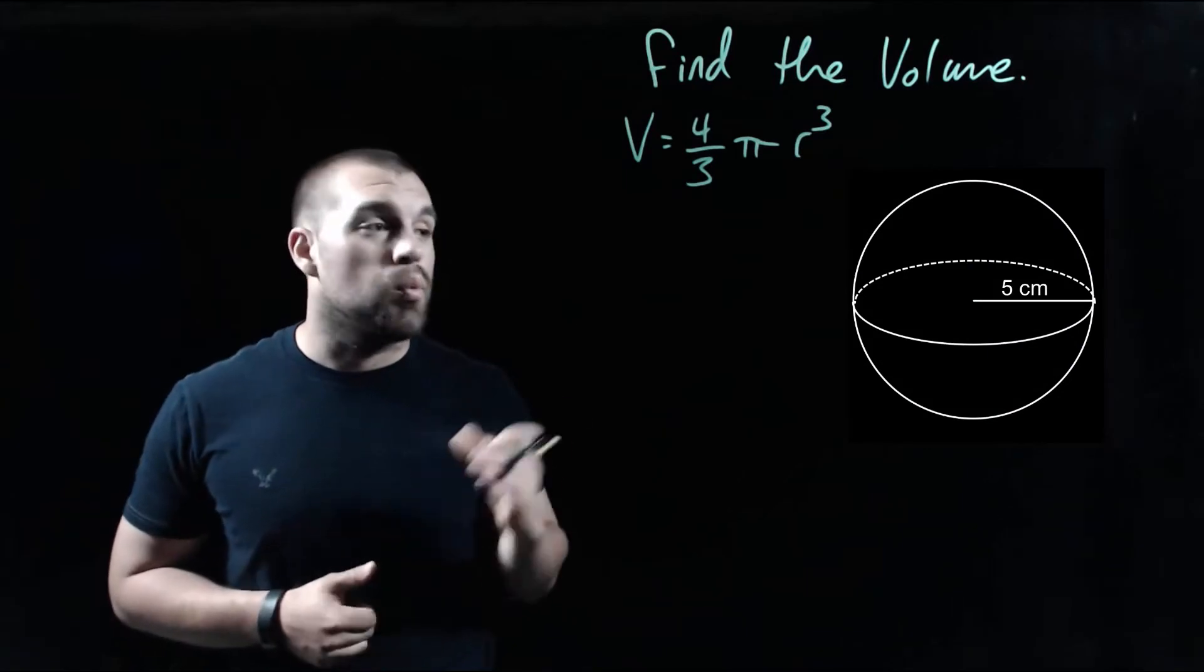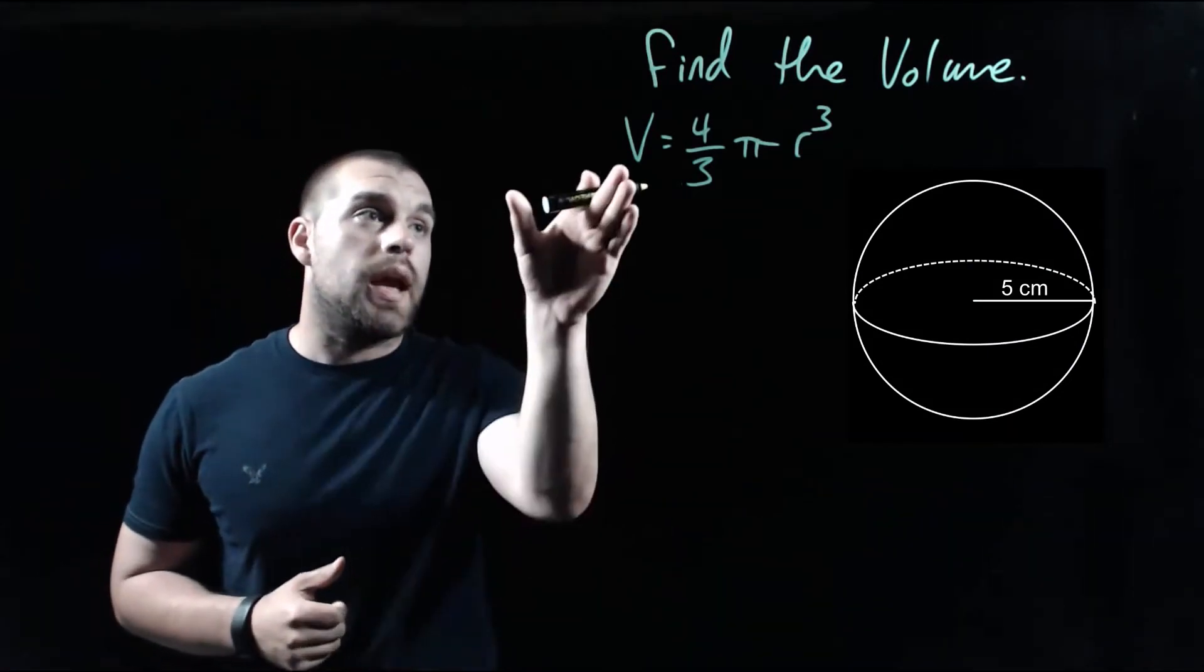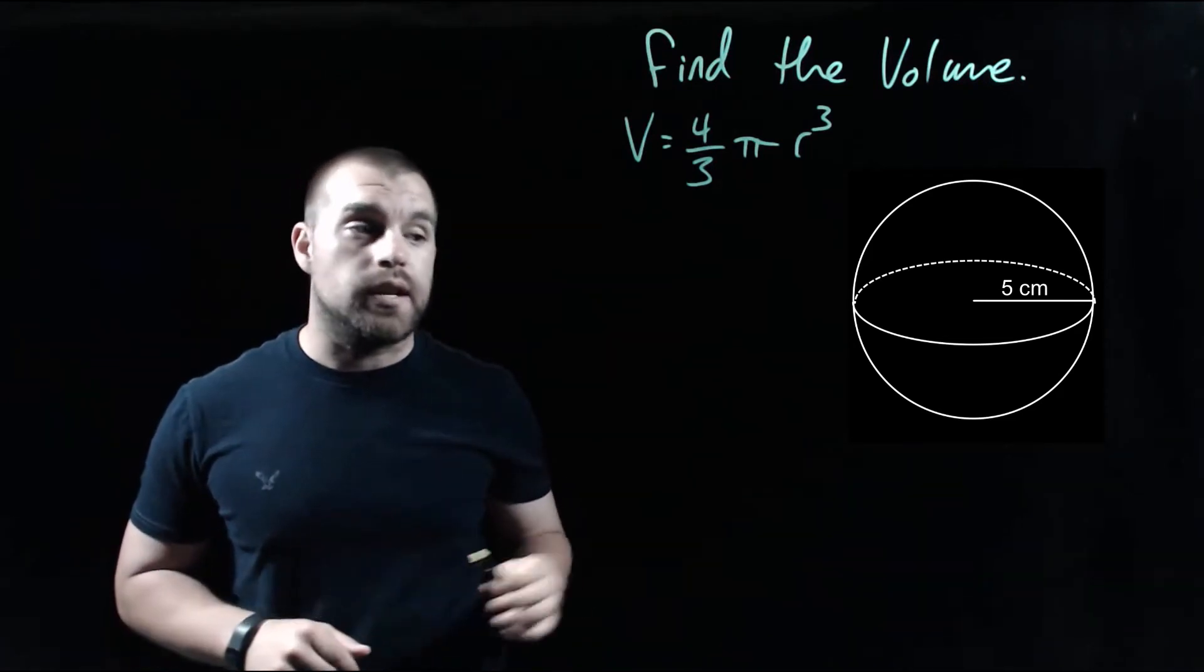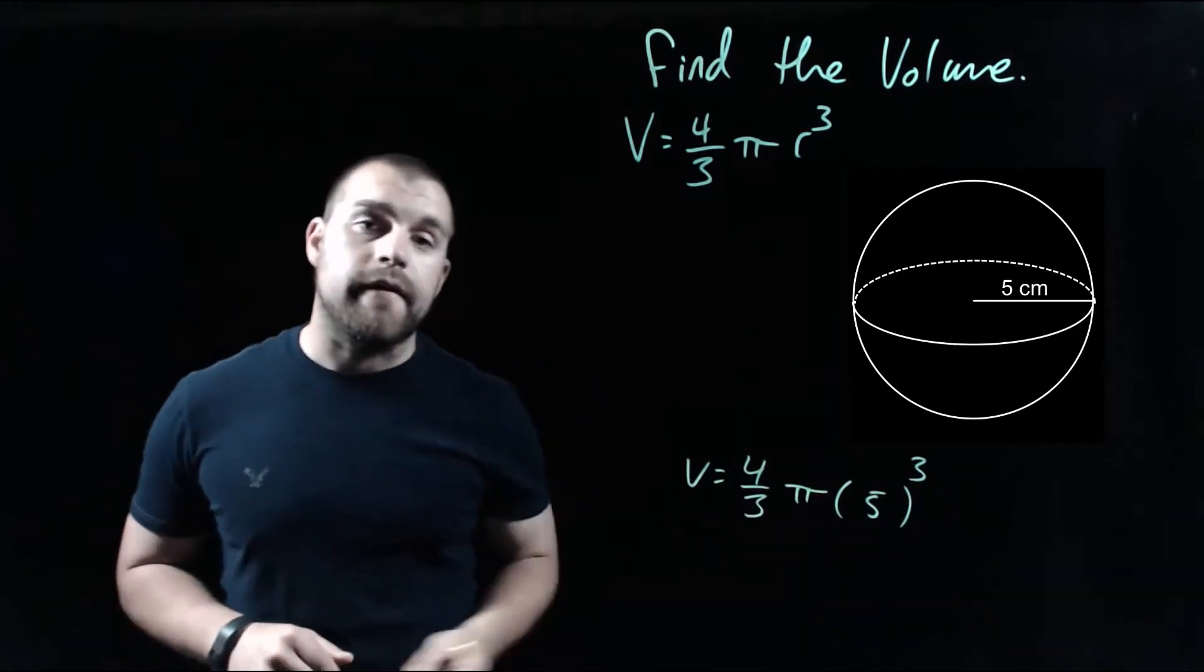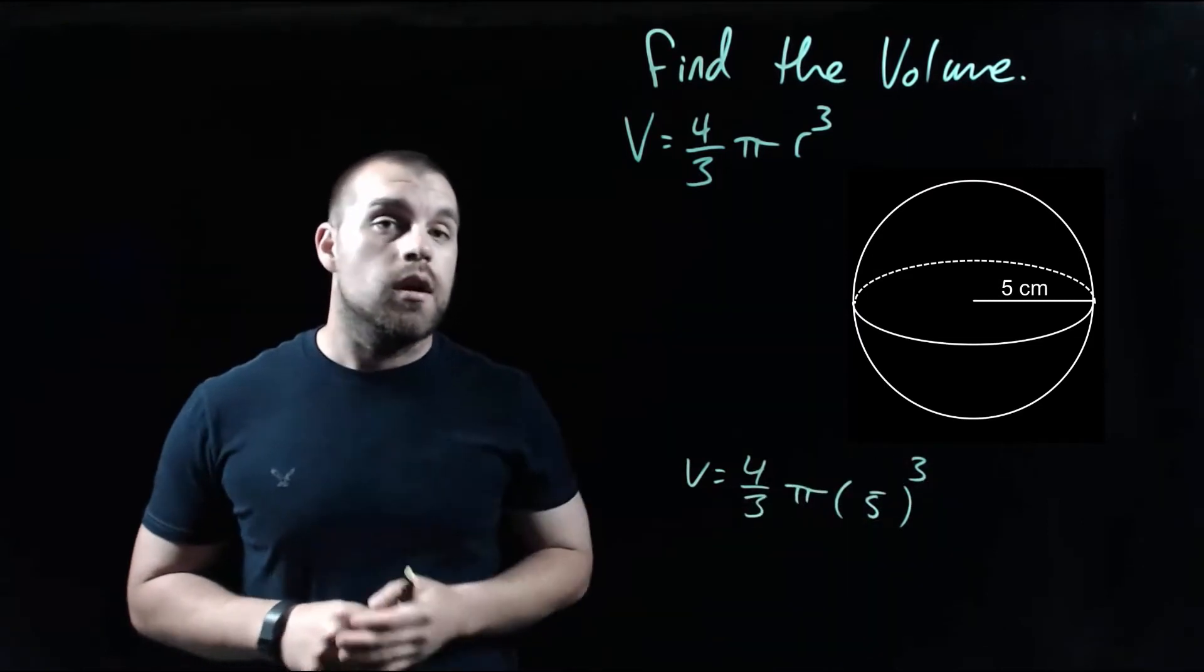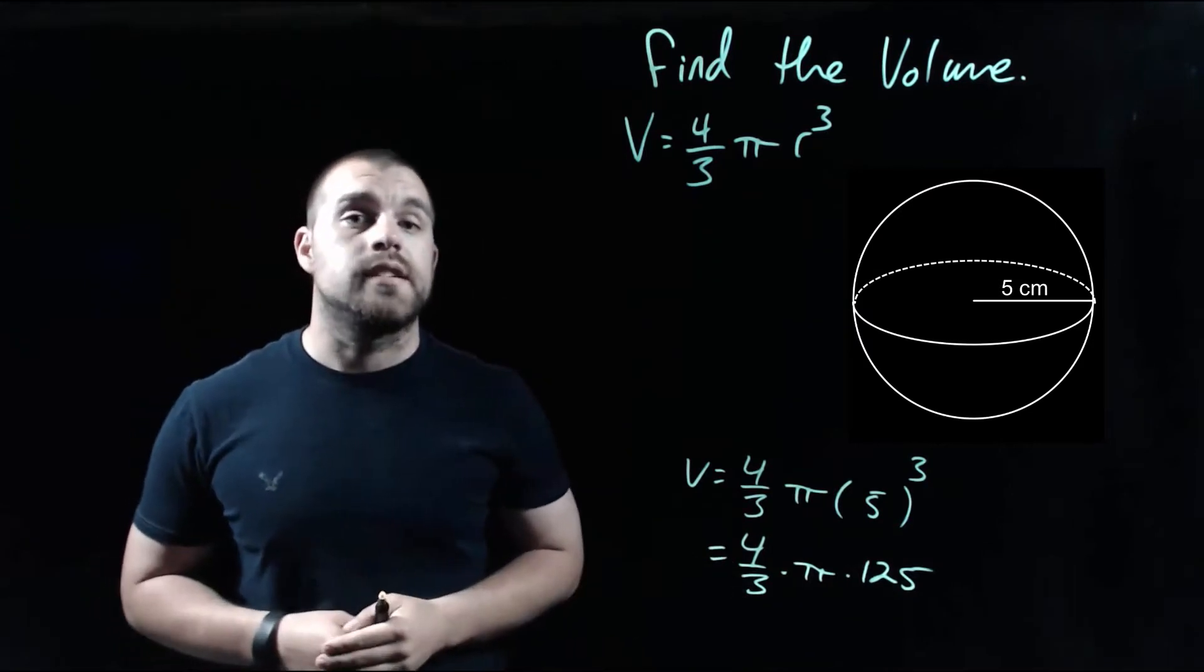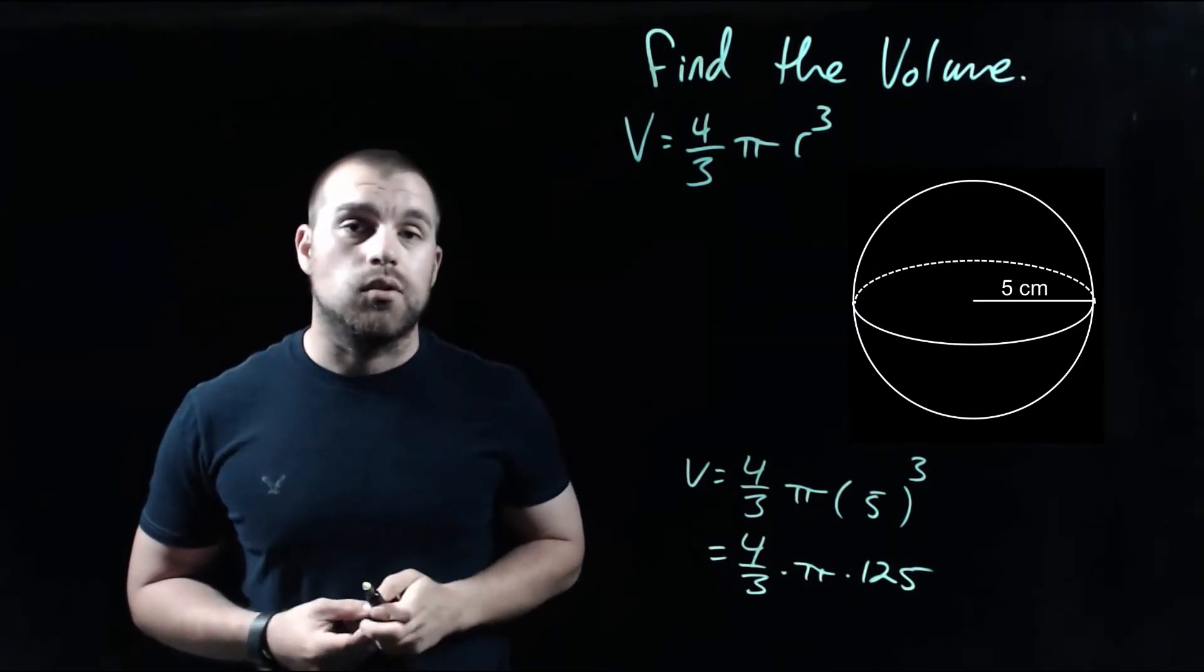So as we look at this first example, we're given a sphere with a radius of 5 centimeters. Looking at our volume formula, we're going to do 4 thirds times pi times the radius cubed. So I filled in my 5 for the radius. Now, in our calculator, if we take 5 cubed, that's 125. And I would just take all of this and type it into my calculator. 4 thirds times pi times 125.